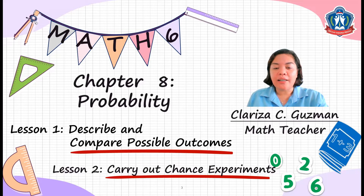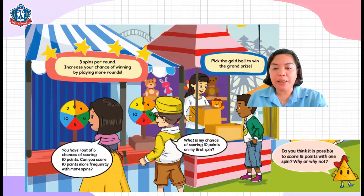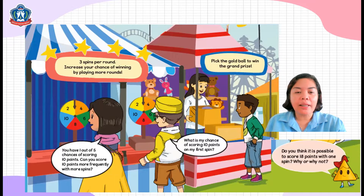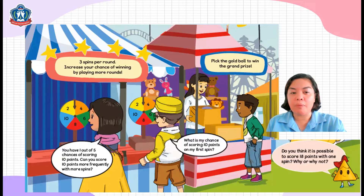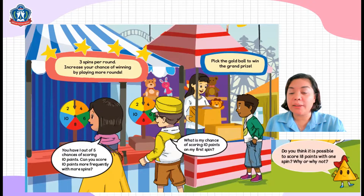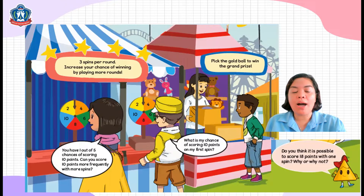Take a look here. I have here a picture of a game zone or game area. Look at the children. They have some skins here — three skins per round. So, you can increase your chance of winning by playing more rounds. Look at the girl. You have 1 out of 5 chances of scoring 10 points. Can you score 10 points more frequently with more skins? So, there is only 1 ten out of 5 chances.